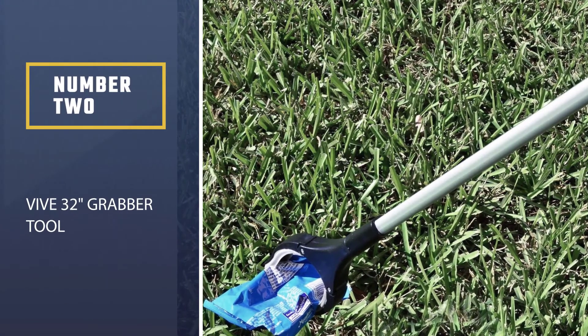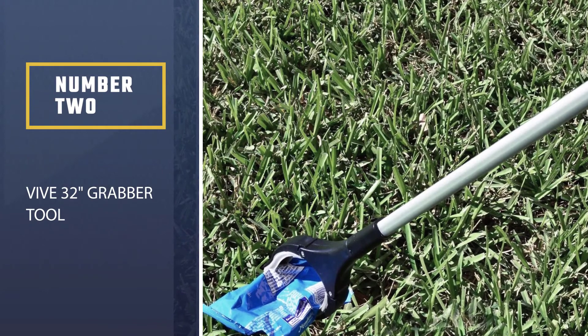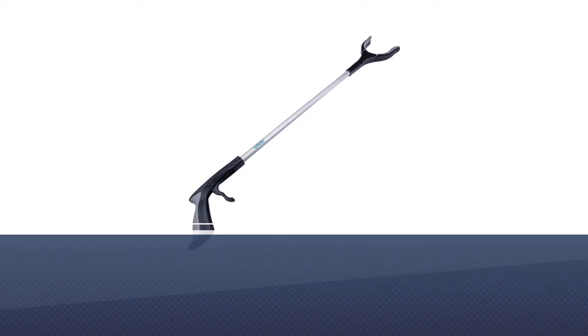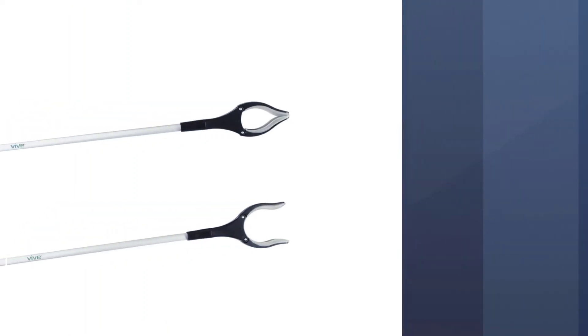Number two, Vive 32 inch grabber tool. The Vive reacher grabber has a 32 inch patented design that helps grab things in high, low, and hard to reach places, as well as trash that you don't want to pick up.